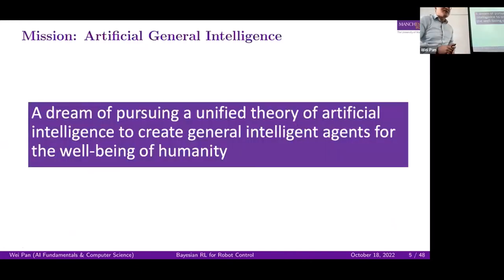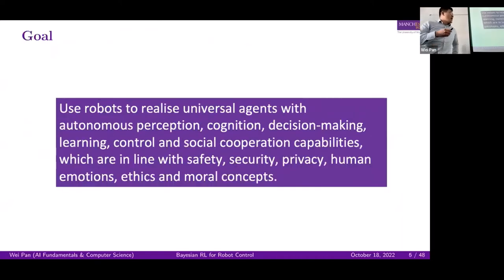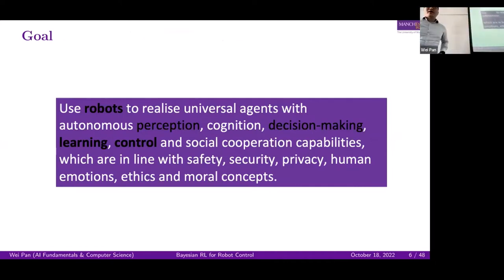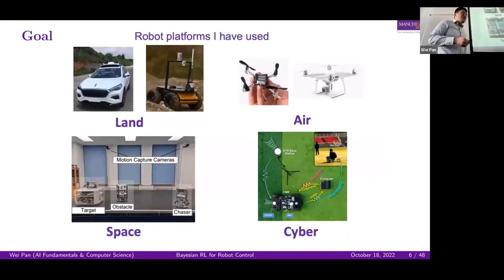Many people have had a dream of pursuing a unified theory of artificial intelligence to create a general intelligent agent for the wellbeing of humanity. My goal is to use the robot to realize a universal agent with autonomous perception, cognition, decision-making, learning, control, and social cooperation capabilities, in line with safety, security, privacy, human emotions, ethics, and moral concepts. My focus is more on the learning and control part. I believe beyond the humanoid robot, this artificial general intelligence agent can be implemented across different robot platforms for particular applications.